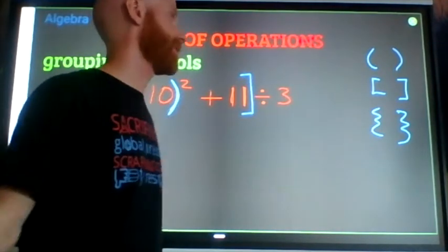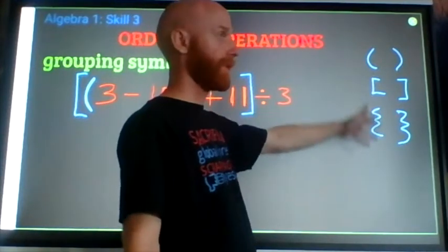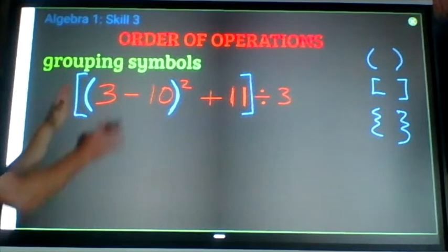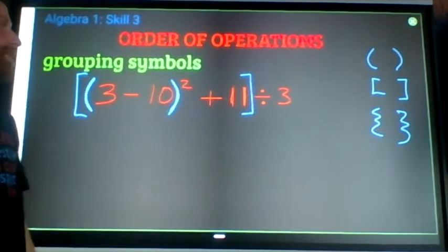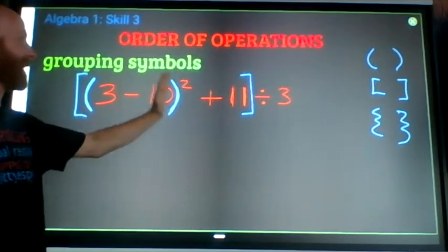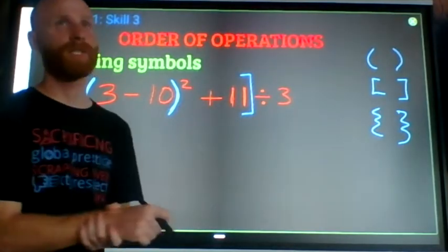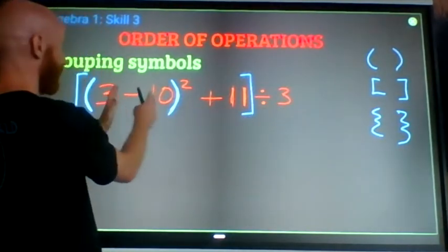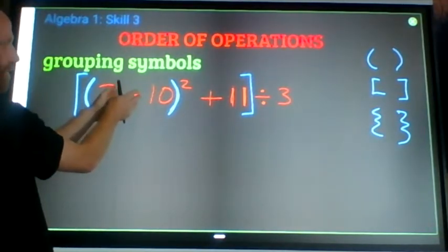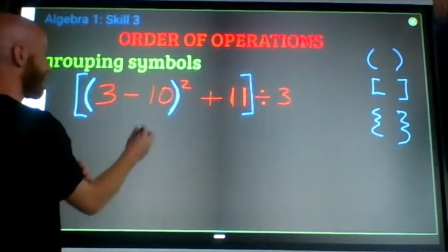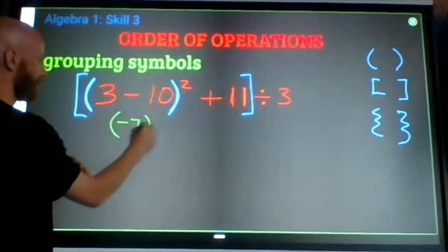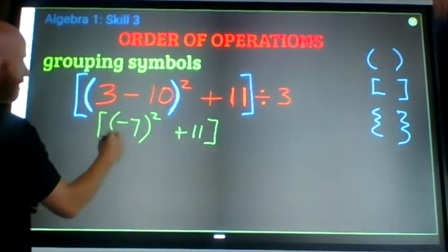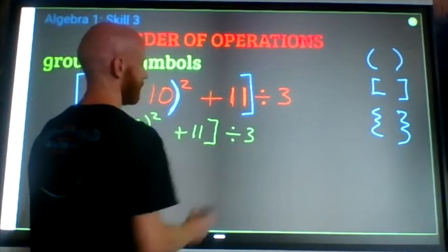Parentheses, brackets, braces. These things, when we're using them all serve the same function, they group terms together. The only reason that we sometimes use different ones is like in this situation, I've got two sets, one inside of the other. So it helps me distinguish where is the beginning and ending of each pair of grouping symbols. When you have grouping symbols in a problem, you work from the inside out. So the farthest inside right now is three minus 10. And I'll work my way out. Three minus 10 is negative seven. That's going to be squared.